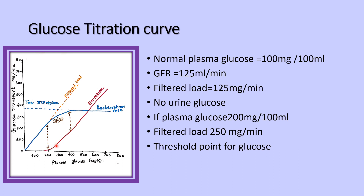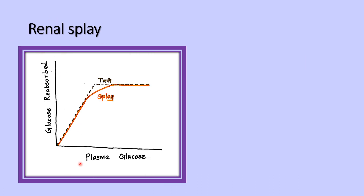This is the renal splay curve. The X-axis depicts the plasma glucose and the Y-axis depicts the glucose reabsorption. The renal threshold is the plasma glucose level at which glucose appears in the filtered urine — around 200 mg per deciliter in arterial blood and 180 mg per deciliter in venous blood.